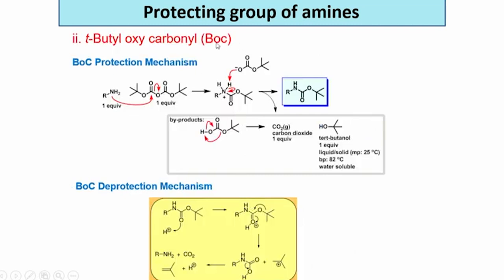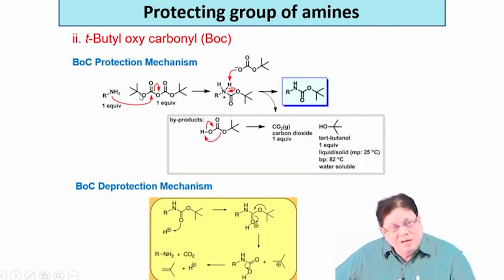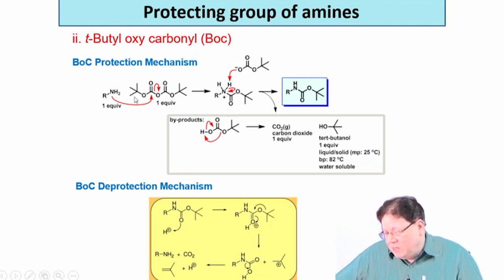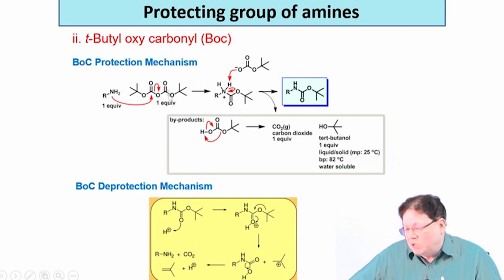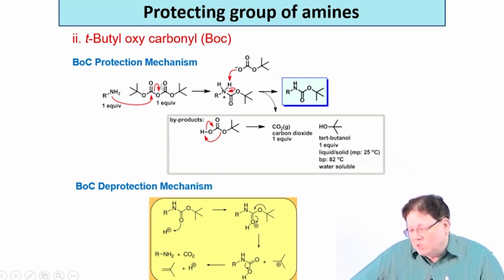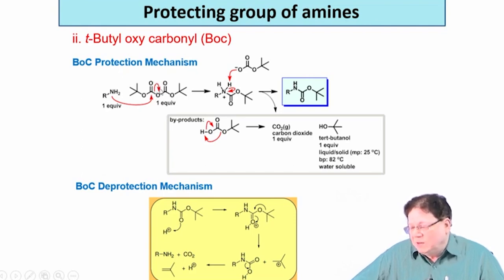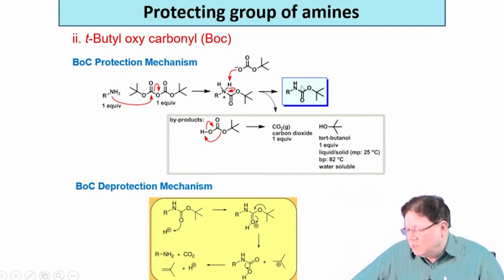For protection by the T-butyloxy group, that is T-BOC, there are many reagents. The most commonly used is called T-BOC anhydride, or Boc anhydride - the T-butyloxycarbonyl anhydride because you have a CO-O-CO, that is the anhydride portion. You take Boc anhydride, one equivalent, add the amine - you do not have to add any other thing - just in a solvent. What will happen is this NH2 will attack one of the anhydride carbonyls, and then that loses carbon dioxide. Finally, what you get is the T-butyloxycarbonyl protected amine.